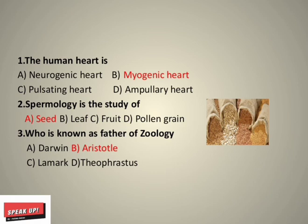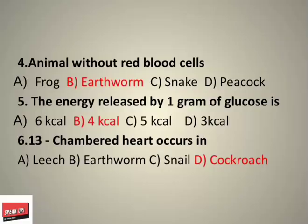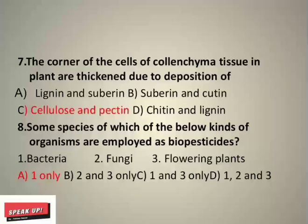Spermology is the study of seeds. Who is known as the father of zoology? Aristotle. Which animal is without red blood cells? Earthworm — the correct answer is earthworm. Next, the energy released by 1 gram of glucose (C6H12O6) is 4 kcal.